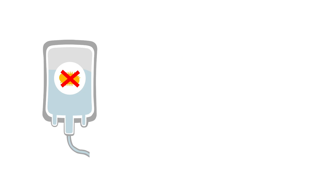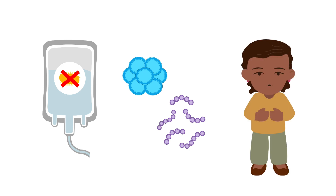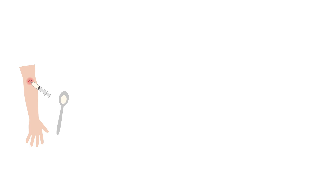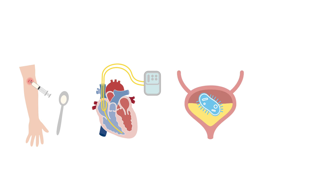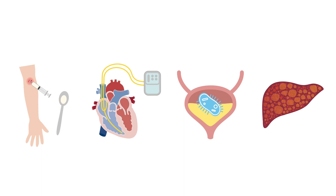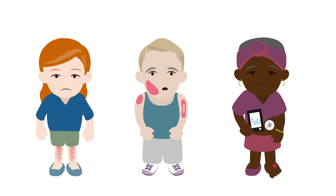In choosing an empiric regimen for infective endocarditis, we must decide what the most likely causative microorganisms are. We can make an informed decision based on patient characteristics. We must consider whether the patient injects drugs, has an implantable cardiac device, has an associated genitourinary infection source, has cirrhosis, has chronic skin conditions, has a burn wound infection, or has poorly controlled diabetes.